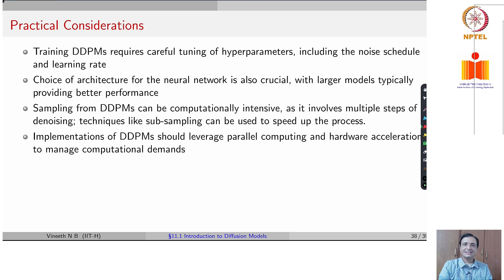To summarize practical considerations while training diffusion models, it requires careful tuning of hyperparameters, especially your noise schedule and learning rate. The choice of architecture for the neural network, which is used to predict your noise at every step can also be crucial with larger models giving better performance, but also leading to more memory footprint and compute footprint.